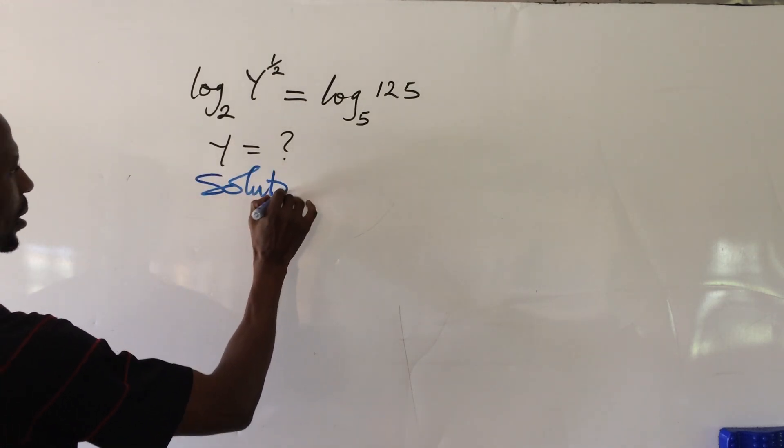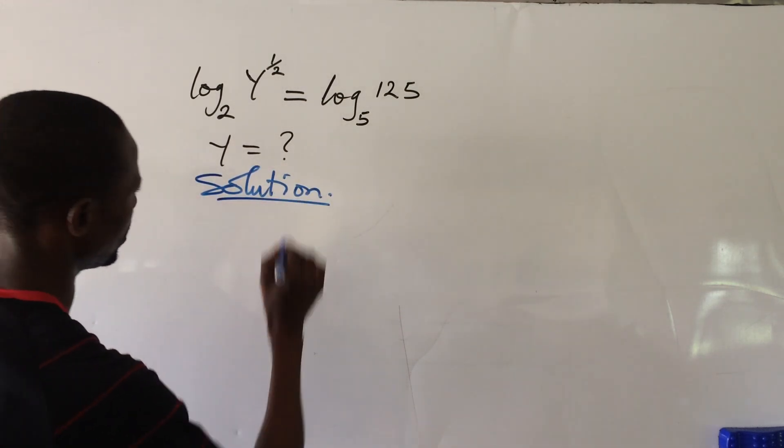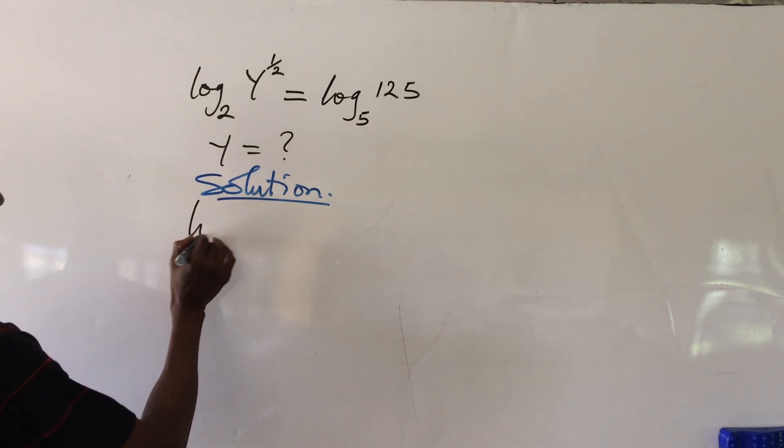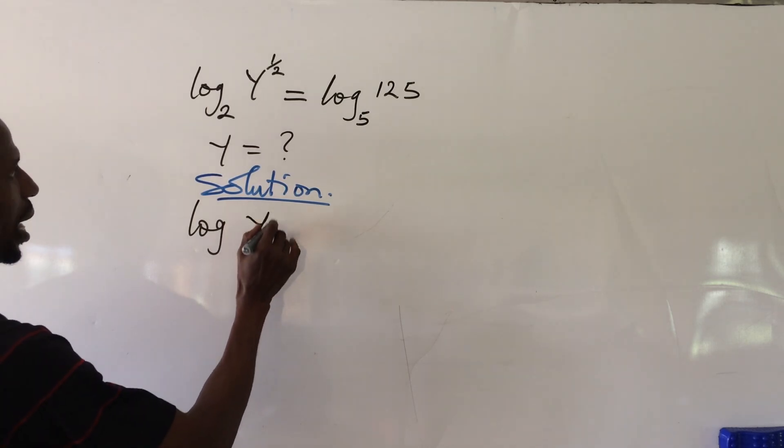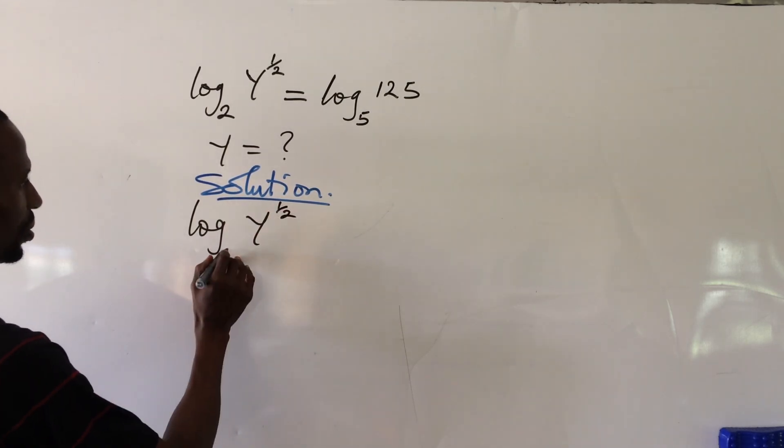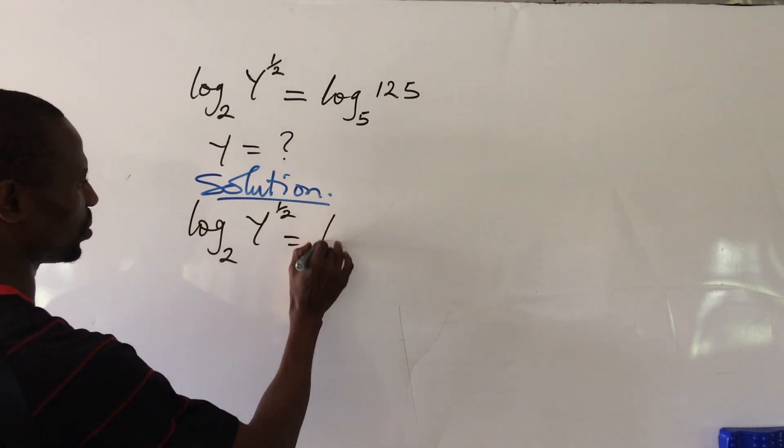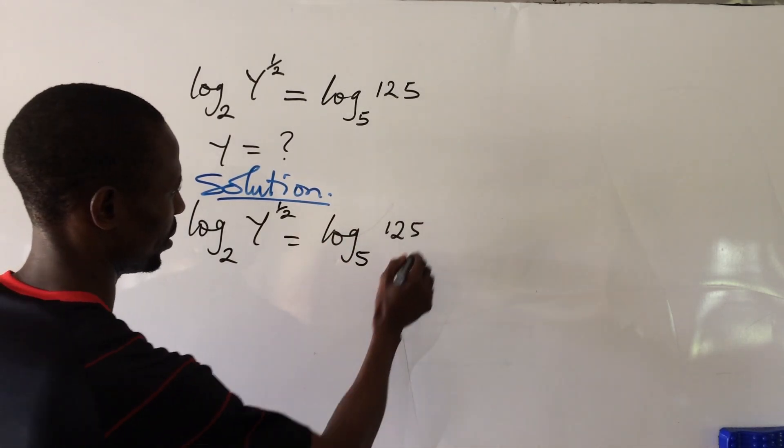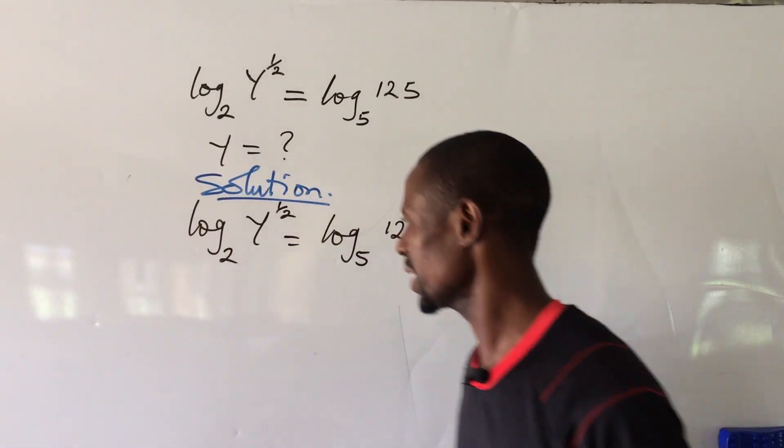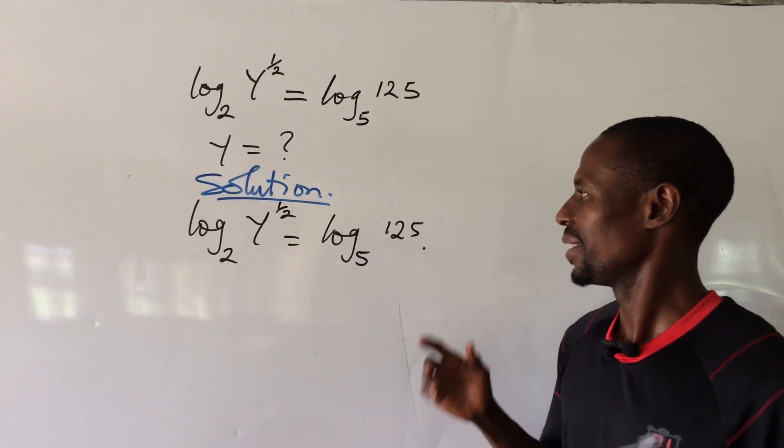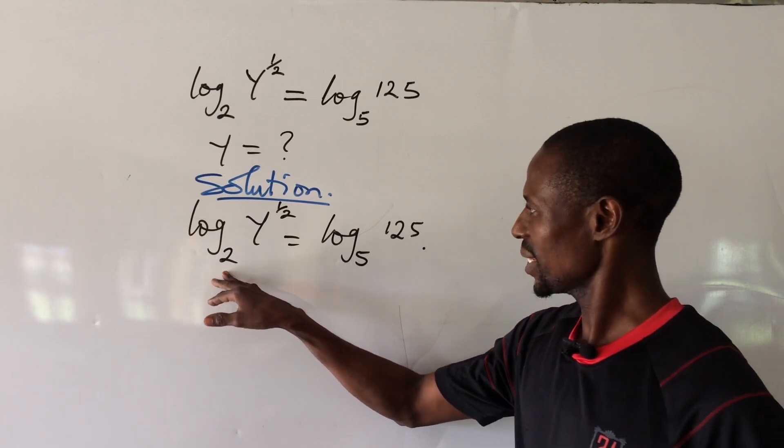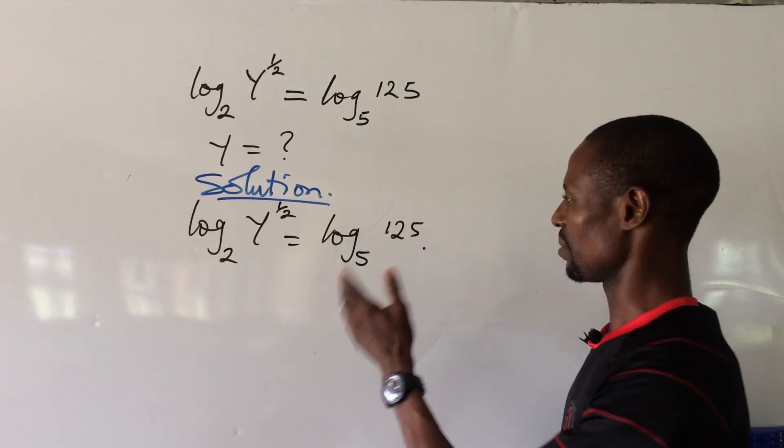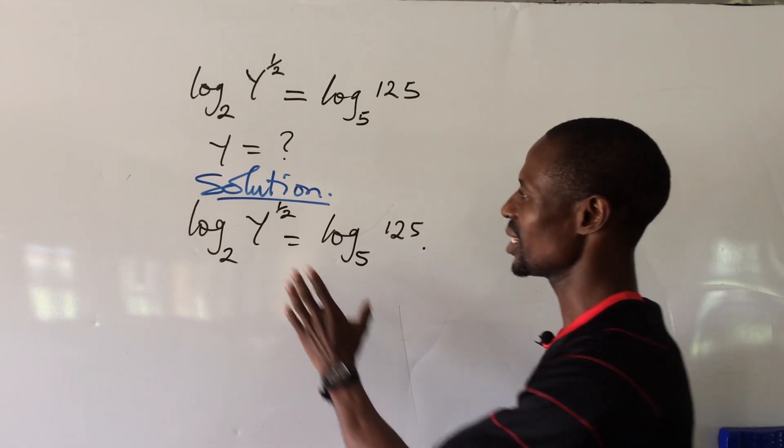We have our solution. So we write down our equation which reads: log y to the power of 1/2 base 2 equals log 125 base 5. Good. Now looking at this equation, the base on the left hand side is different from that on the right hand side.